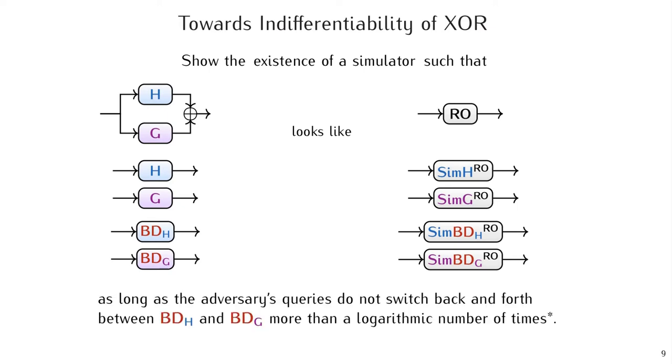Which was, as long as the adversary's queries do not switch back and forth between the backdoor oracles more than a logarithmic number of times. Logarithmic in the size of the inputs to the combiner.